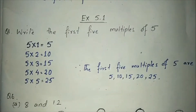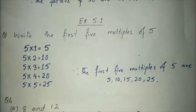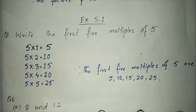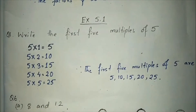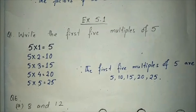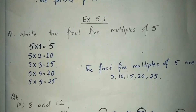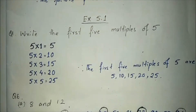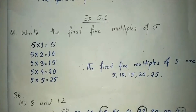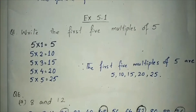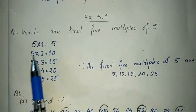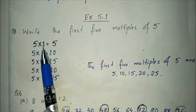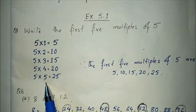Now students, open your book with me to Exercise 5.1, page number 49. Read the first question: Write the first 5 multiples of 5. I have already taught you how to find the multiples of a number. You have to multiply 5 with the first 5 counting numbers.